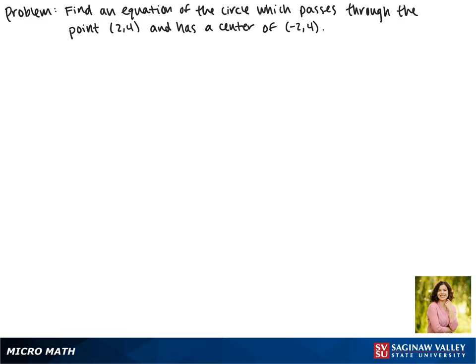Today we'll be finding an equation of the circle which passes through the point (2, 4) and has a center of (-2, 4).